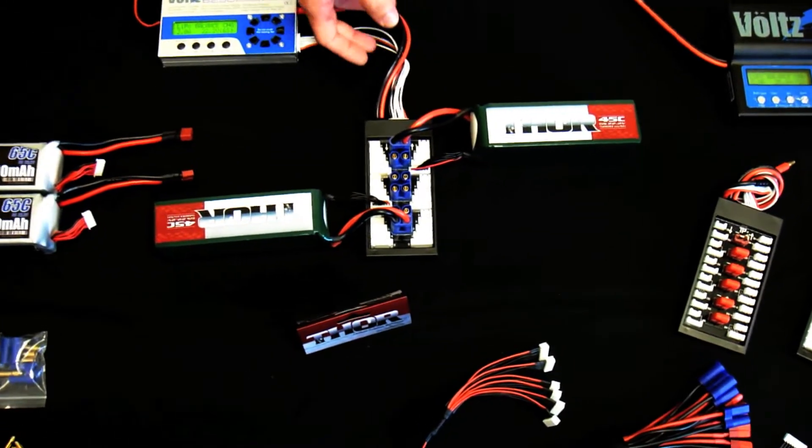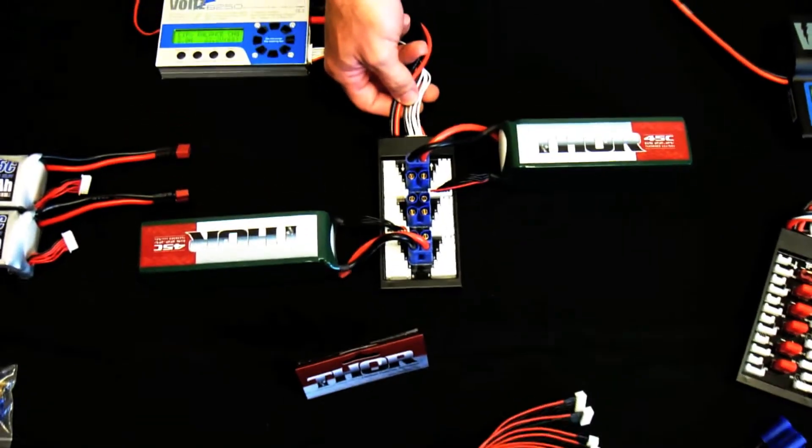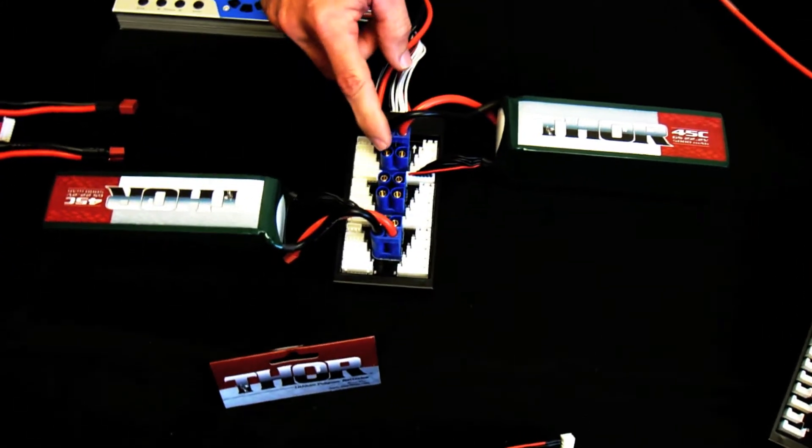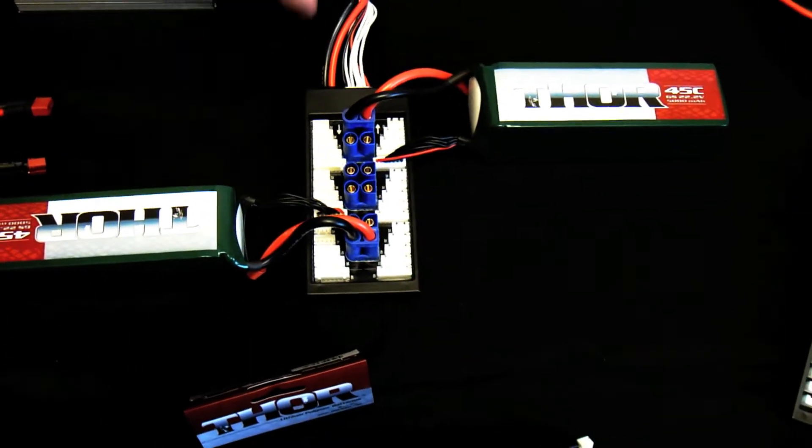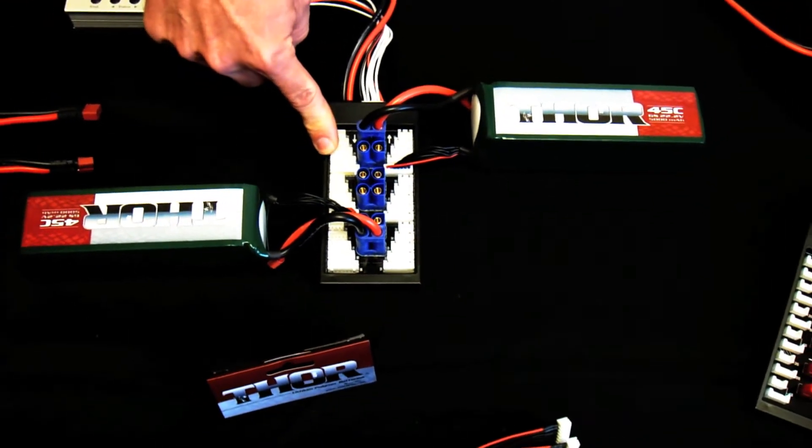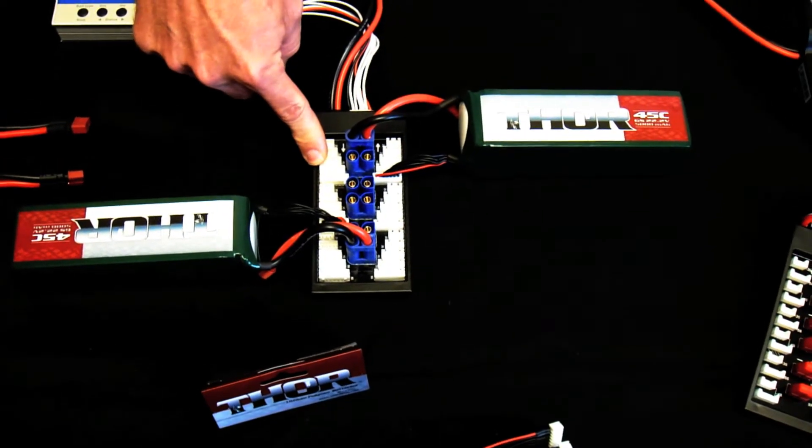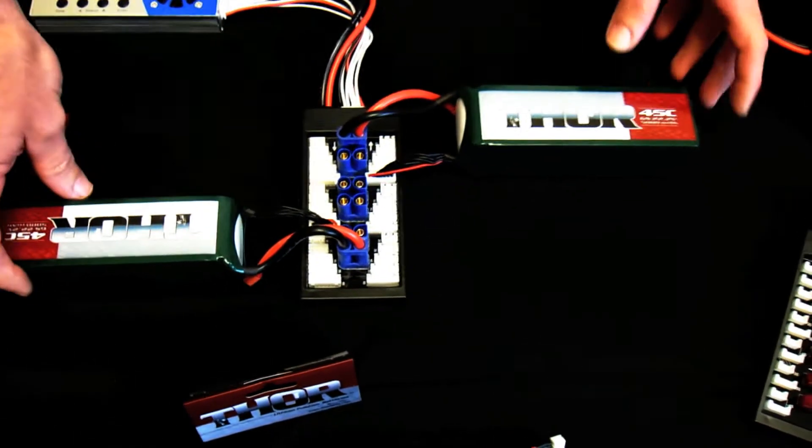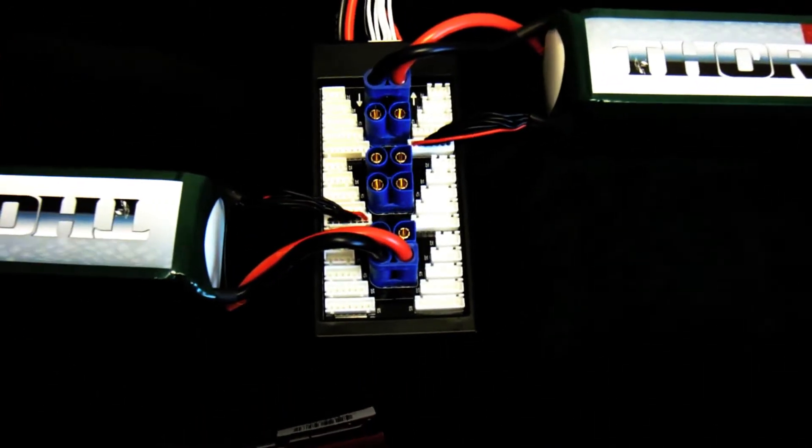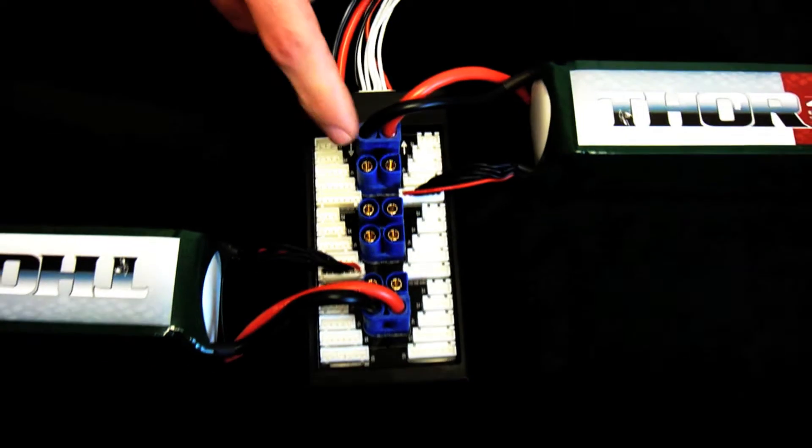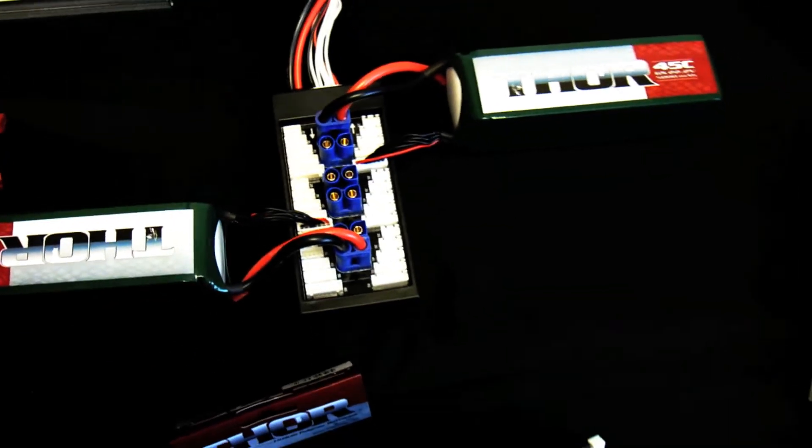First we're going to talk about the parallel boards. We have four available. They have EC5's or Dean style plugs on them with JST balance tabs and/or Thunder Power balance tabs. This one is set up to charge two six cell 5000 packs. You can charge up to six packs with these parallel boards.